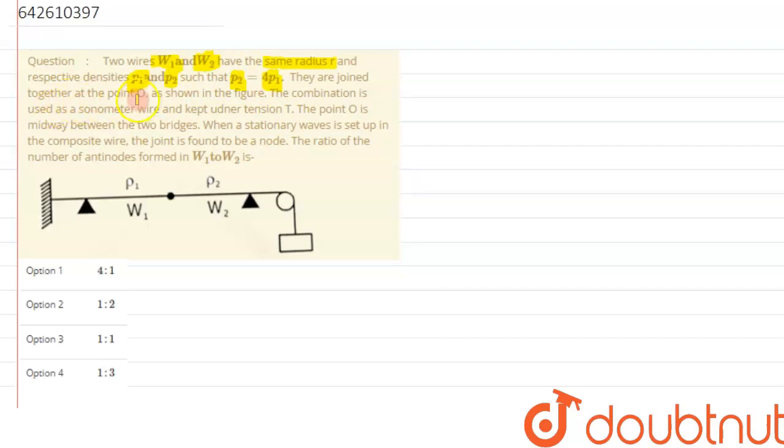They are joined together at point O as shown in the figure. The combination is used as a sonometer wire and kept under tension T. The point O is midway between the two bridges. When a stationary wave is set up in the composite wire, the joint is found to be a node.